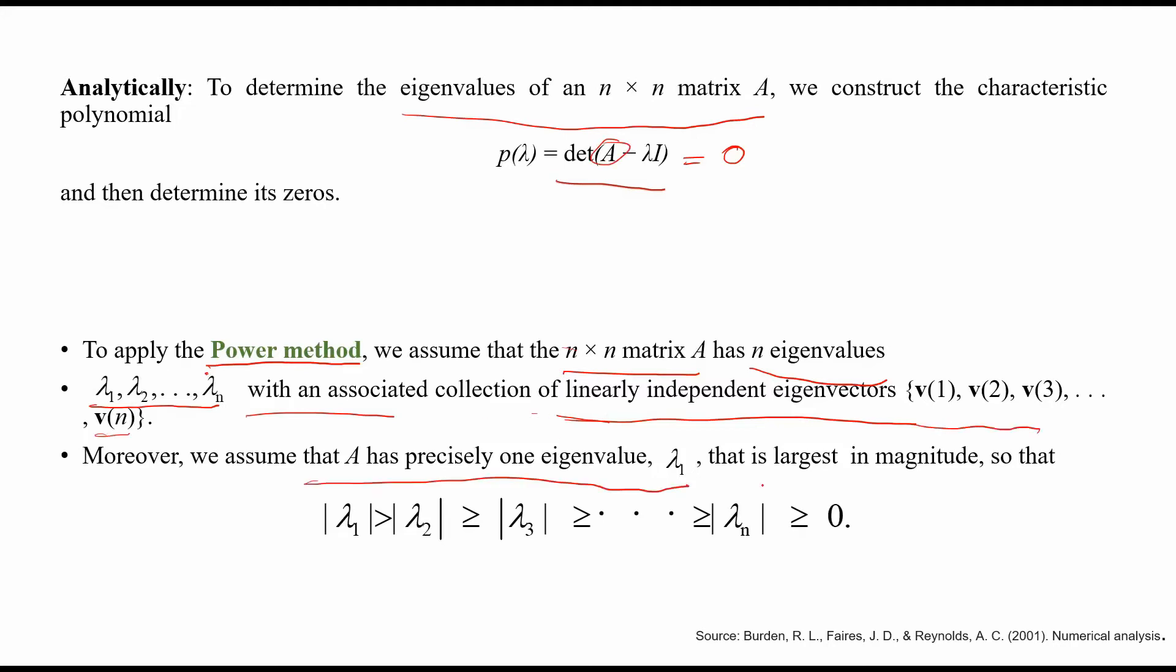Moreover, we assume that A has precisely one eigenvalue λ₁ that is largest in magnitude, so that |λ₁| > |λ₂| ≥ |λ₃| ≥ ... ≥ |λₙ| ≥ 0. We will be finding this eigenvalue with the help of our power method.